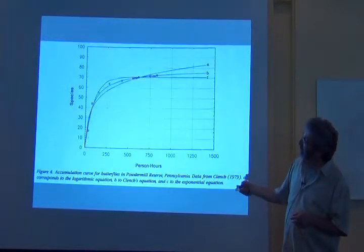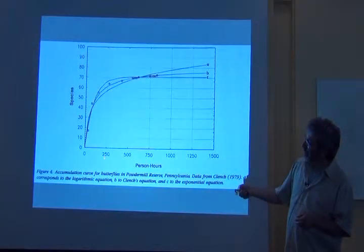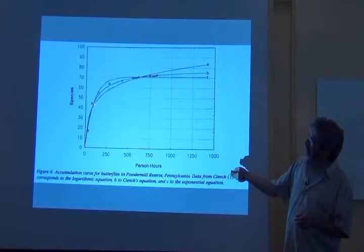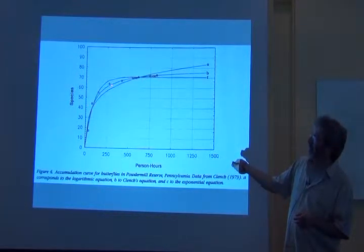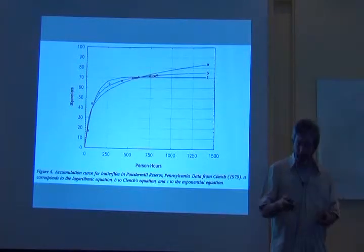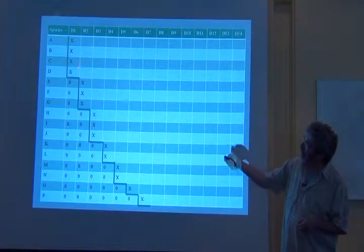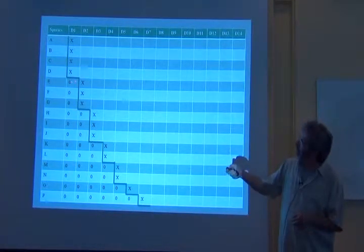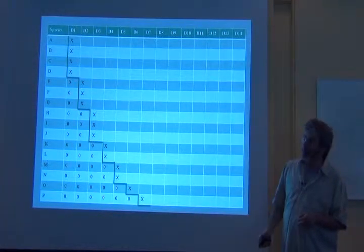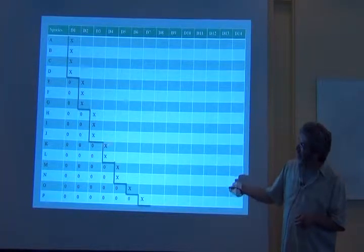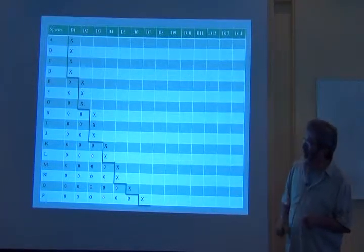The information that went into these graphs is the first day I got 17 species, the next day I got another set of species, so I'm up to 44. I got 11 more the third day, I got eight more the fourth day. And so those data look like this. The first day I got these four species, the second day I got these three species, next day three, next day two, next day two, next day one, next day one.